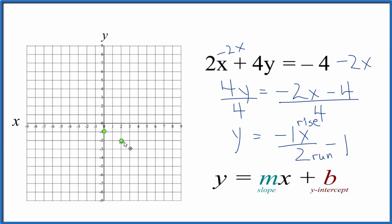From that point, we would rise negative 1. It means we go down. And then we go to the right, 1, 2. You can see our graph there.